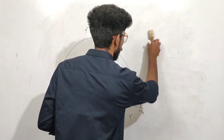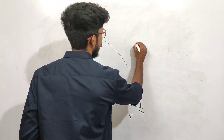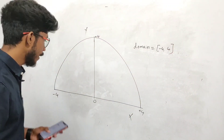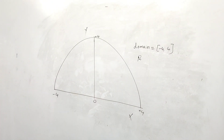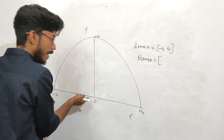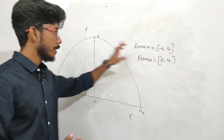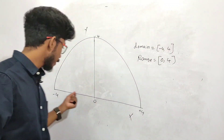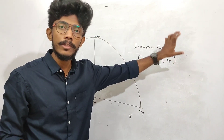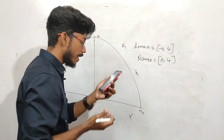Now, we will do it right now. The domain is from minus 4 to plus 4. So domain equals minus 4 to plus 4. The range: what is the range here? The y-axis value goes from 0 to 4.